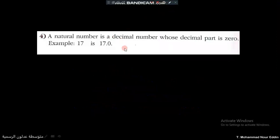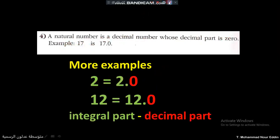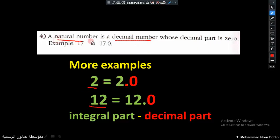A natural number is a decimal number whose decimal part is zero. For example, 17 is a natural number and can be written as a decimal number: 17.0. Similarly, 2 is a natural number written as 2.0, twelve as 12.0, and nine as 9.0.